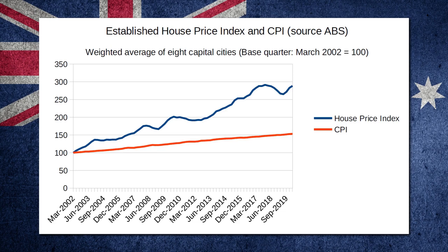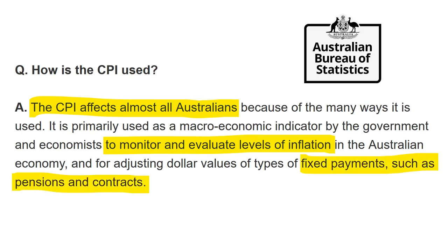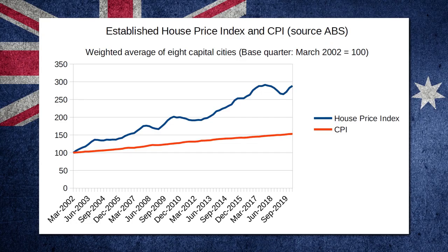So why does any of this matter? Well, one reason — according to the ABS's FAQ — the CPI affects almost all Australians because of the many ways it is used. It is used by the government and economists to monitor and evaluate levels of inflation in the Australian economy and for adjusting fixed payments, such as pensions and contracts. So if you're a pensioner, or a job seeker, or a job keeper — or whatever the hell they call it nowadays — your payments are simply not going to keep up with the cost of housing. The system has been inherently designed that way. House prices will always rise faster than the CPI because of the way it's been designed. Anything that is based on the CPI will lag behind house prices.